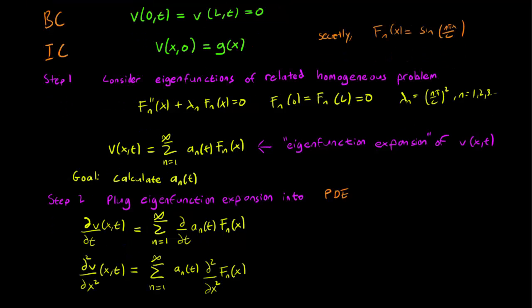And we do the same thing when differentiating V with respect to x twice. The a_n(t) doesn't depend on x, and so we can just ignore it and differentiate just the F_n(x) term.